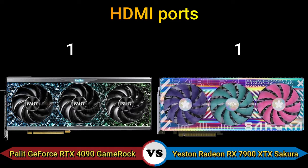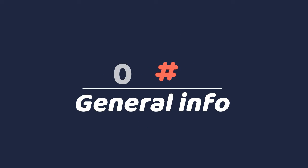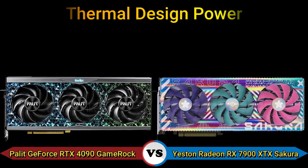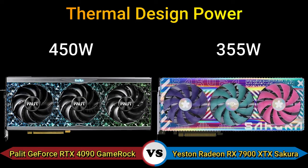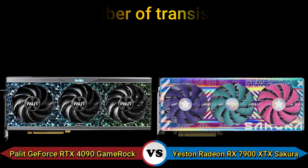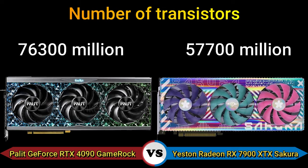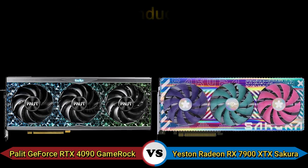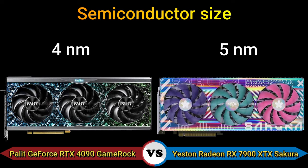Part 4 — General information. Thermal design power: 450 watts and 355 watts. Number of transistors: 76,300 million and 57,700 million. Semiconductor size: 4 nanometer and 5 nanometer.